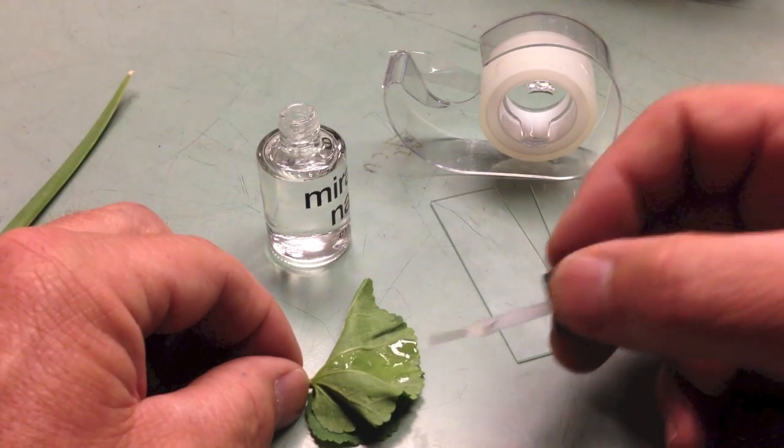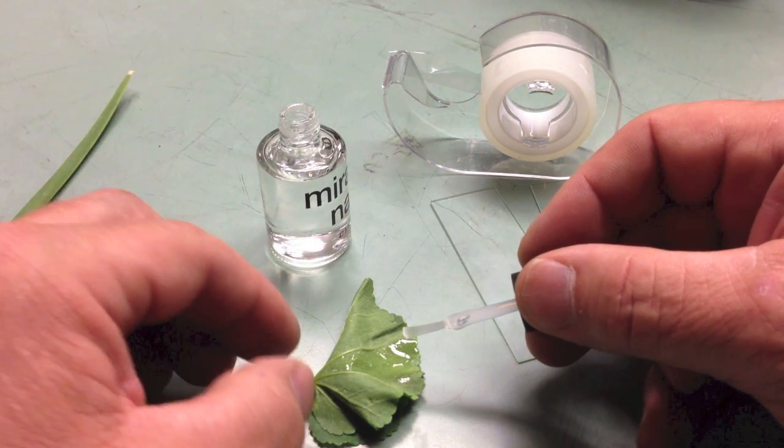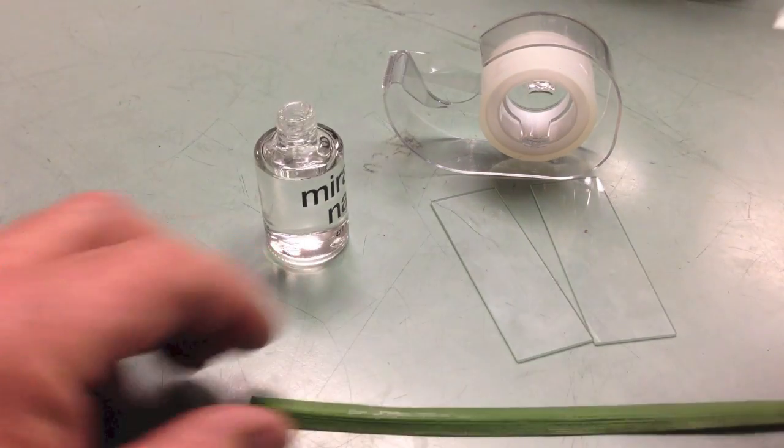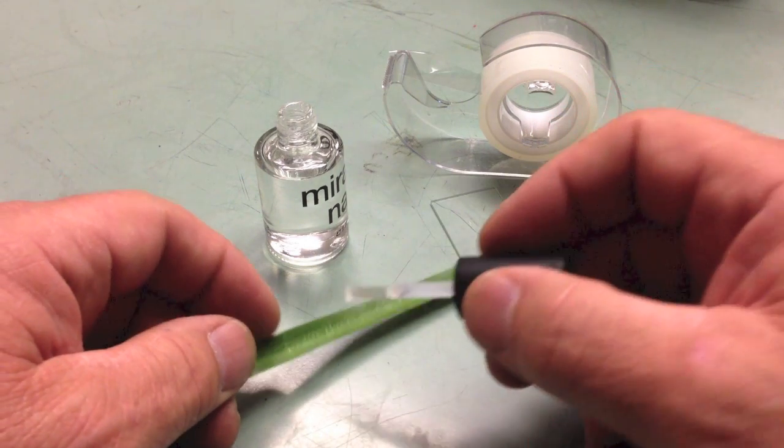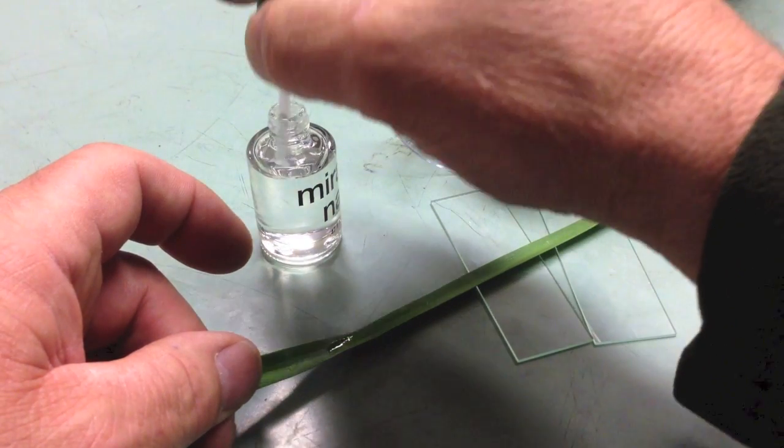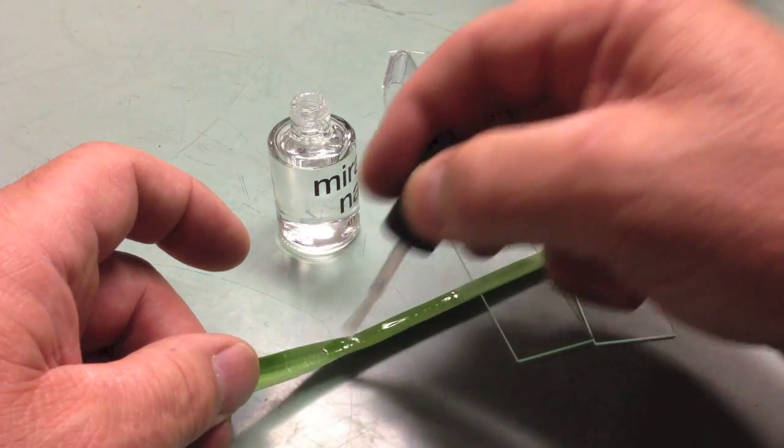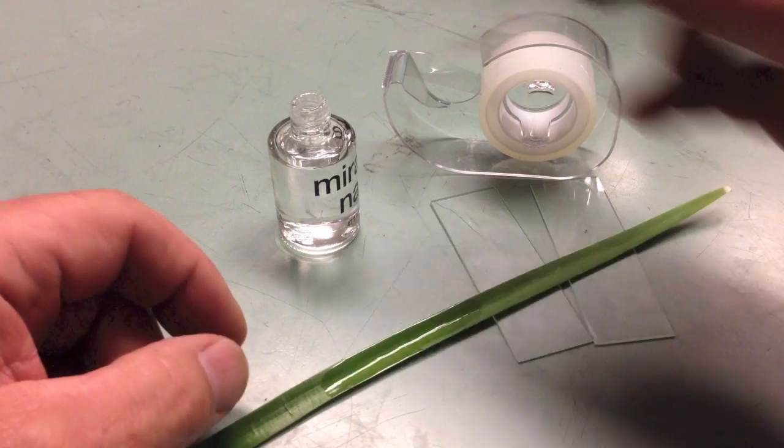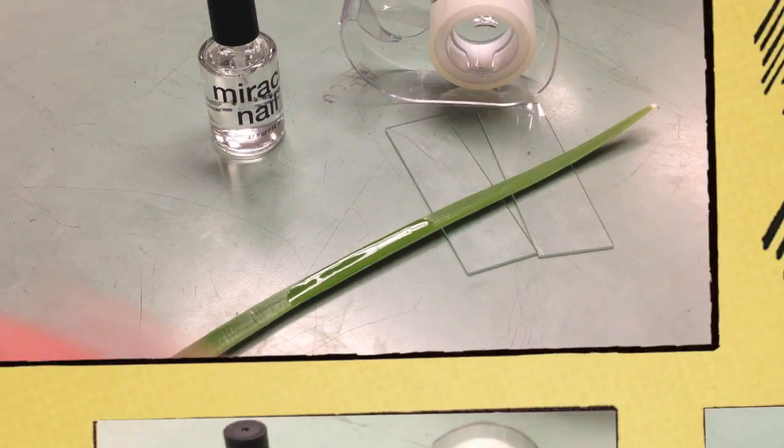Oh, one thing I forgot to mention. You always, on the dicot, you're going to paint the underneath side of the leaves. And now on the monocot, this would be the underneath side. We're going to paint the side that's facing up, and we'll just paint a strip of that. Just like that. Make sure that you get it nice and even. And now what we're going to do, we're going to set that aside and wait for ten minutes. And then we'll come back and I'll show you what to do next.